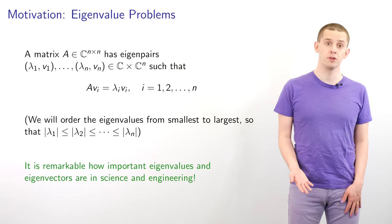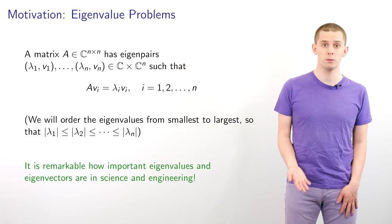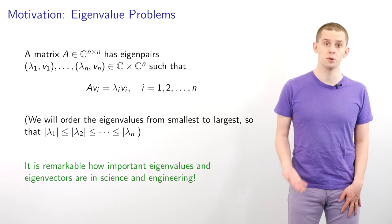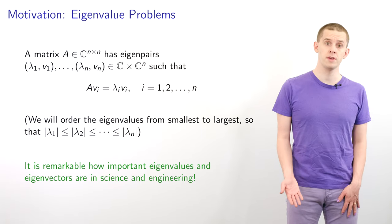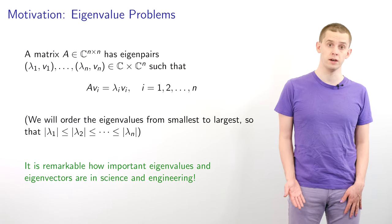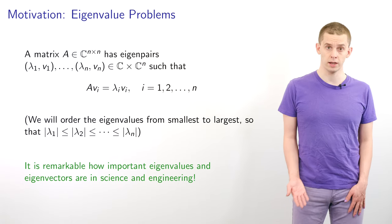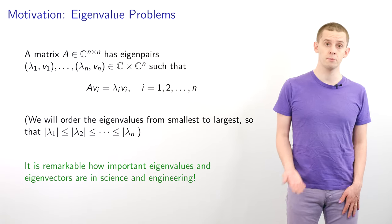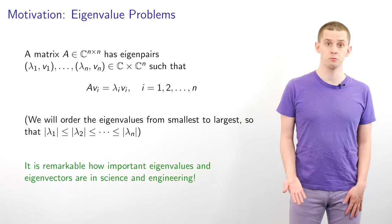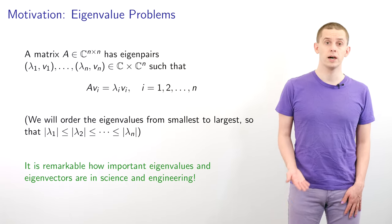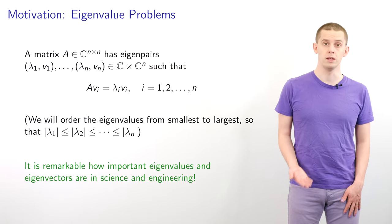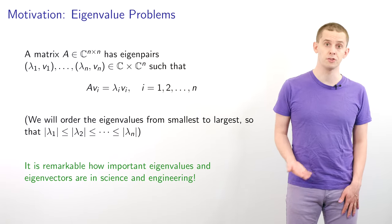Suppose we have an n by n matrix A with complex entries. Then we can say that A has eigenpairs lambda_1, v_1 up to lambda_n, v_n, such that A times v_i is equal to lambda_i times v_i for all i. Here we say that the lambda_i are the eigenvalues and the v_i are the corresponding eigenvectors. And it's remarkable how important eigenvalues and eigenvectors are in many areas of science and engineering.